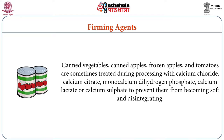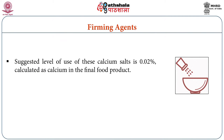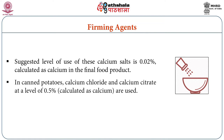Canned vegetables, canned apples, frozen apples, and tomatoes are sometimes treated during processing with calcium chloride, calcium citrate, monocalcium hydrogen phosphate, calcium lactate, or calcium sulfate to prevent them from becoming soft and disintegrating. The suggested level of use of these calcium salts is 0.02%, calculated as calcium in the final food product. In canned potatoes, calcium chloride and calcium citrate at a level of 0.5% calculated as calcium are used.